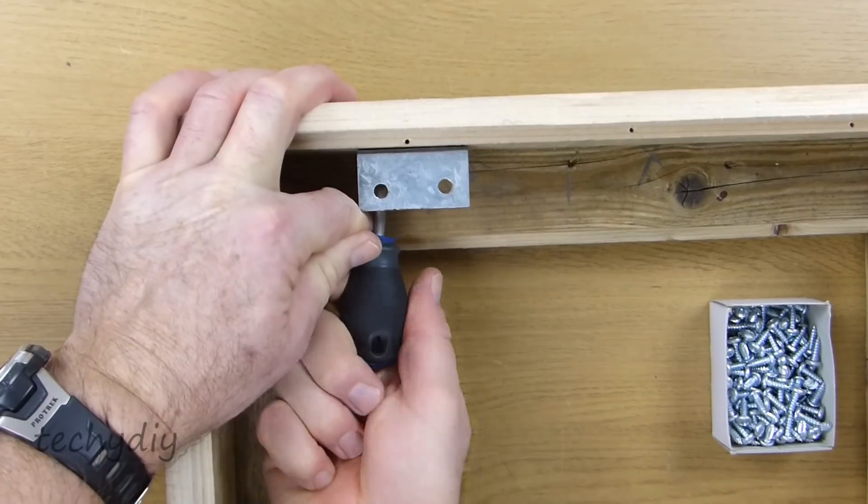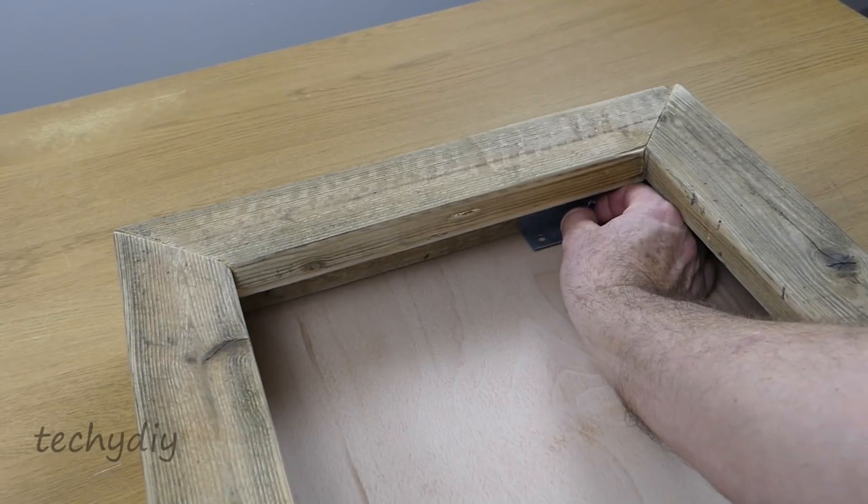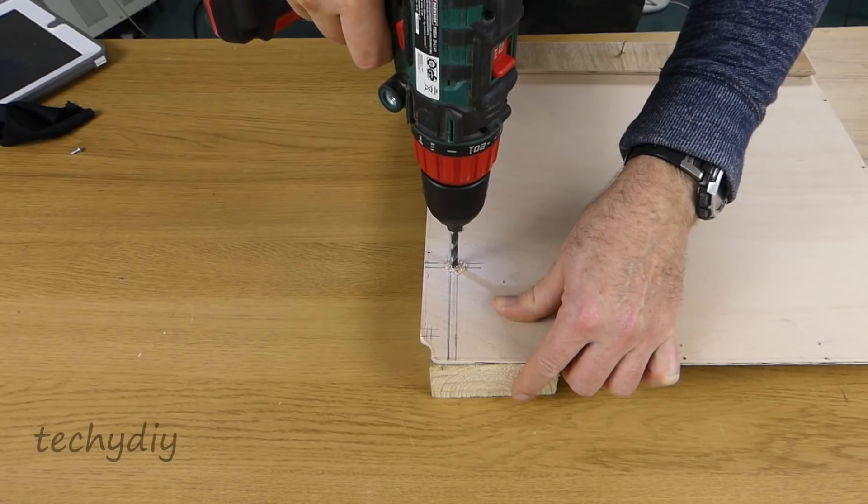The bracket is screwed into position and then the plywood back is marked and a clearance hole drilled for the switch lever.